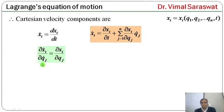So: ∂xi_dot/∂qj_dot = ∂xi/∂qj. Also, d/dt of (∂xi/∂qj):